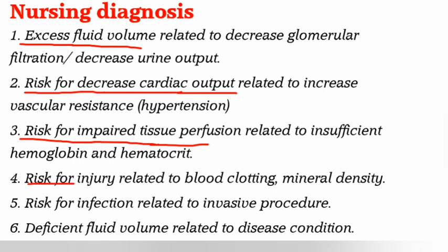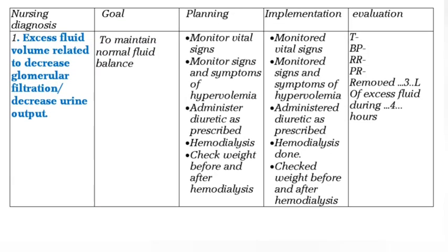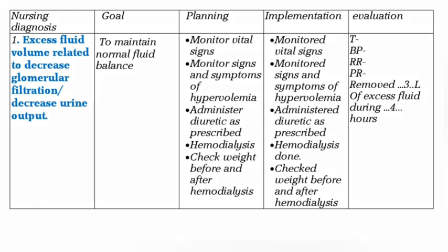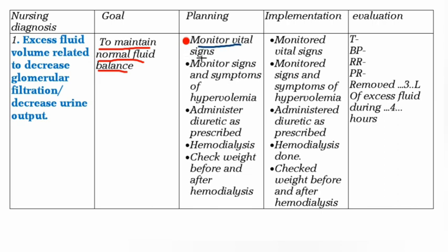Diagnosis 5: Risk for infection related to invasive procedure. Goal: Maintain normal fluid balance. Planning: monitor vital signs, monitor signs and symptoms of hypovolemia, administer diuretics as prescribed, perform hemodialysis, and check weight before and after hemodialysis.